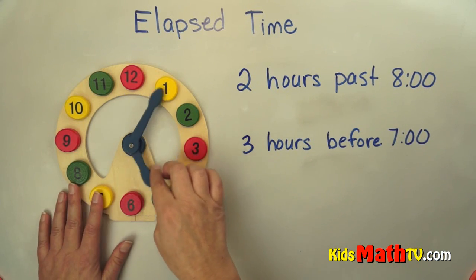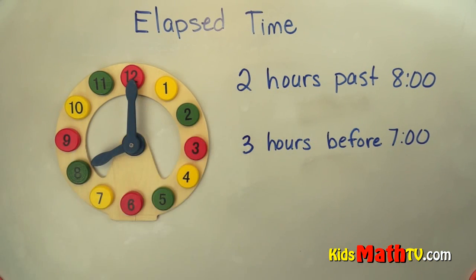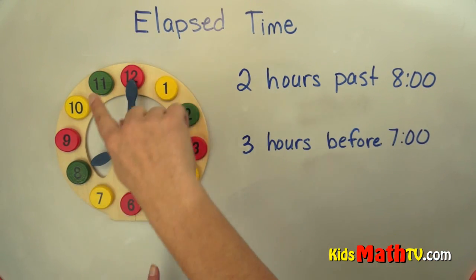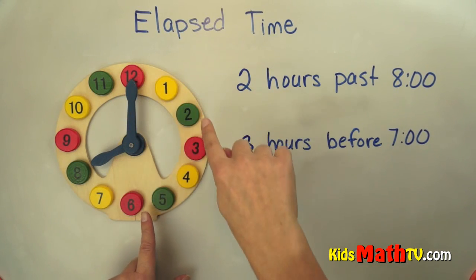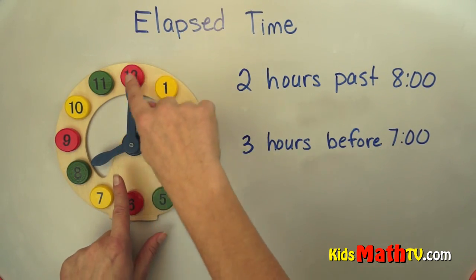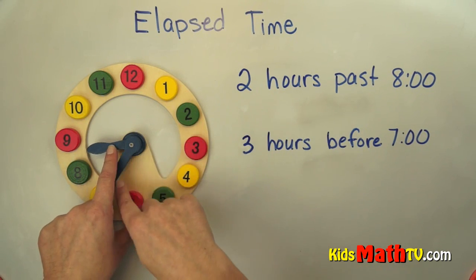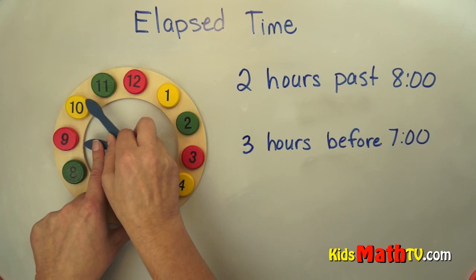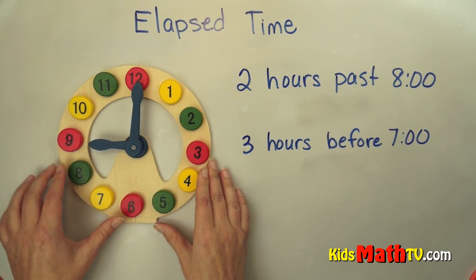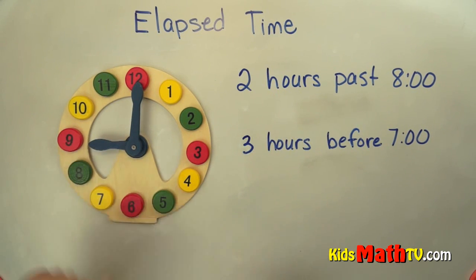So I'm going to start at eight o'clock. So here's eight o'clock. Two hours past eight o'clock. So an hour we're going to move counterclockwise, I'm sorry, clockwise one hour which means the minute hand will go all the way around. Okay, one hour past eight o'clock is now nine o'clock.